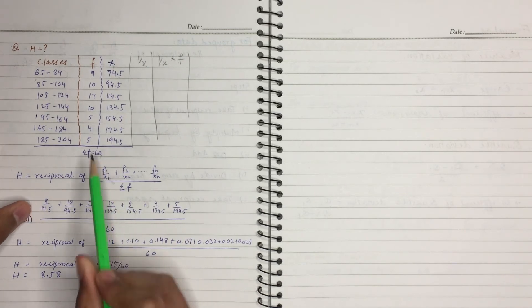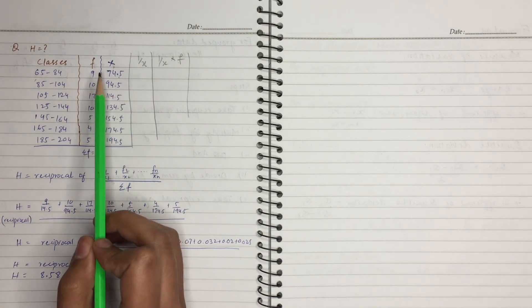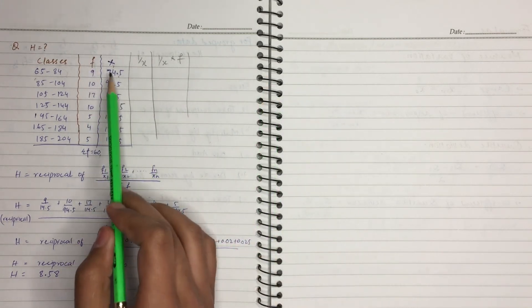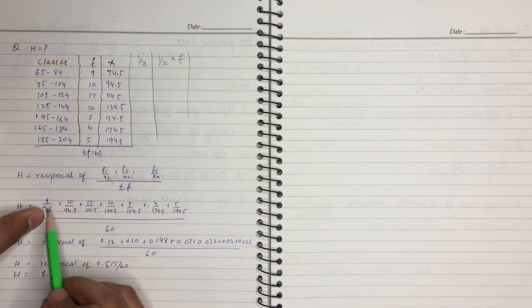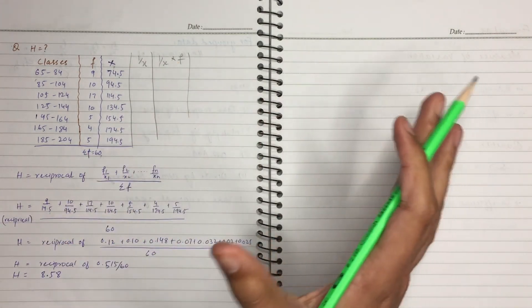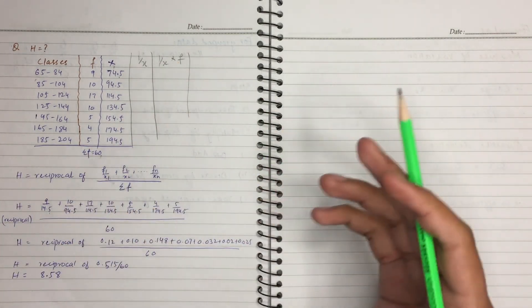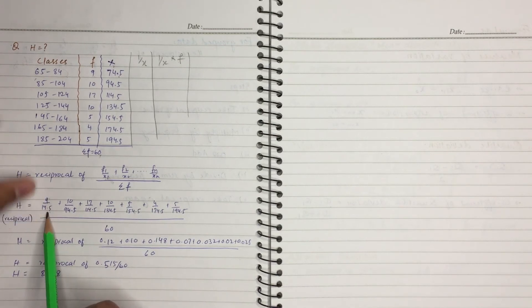F1 over X1. F1 is, for example, 9 over X1, the midpoint that is 74.5. This is the same. 9 over 74.5.